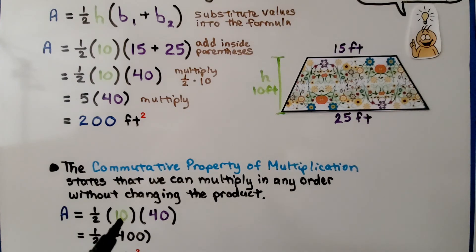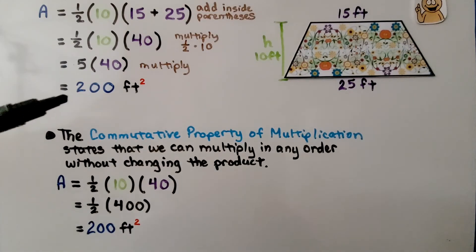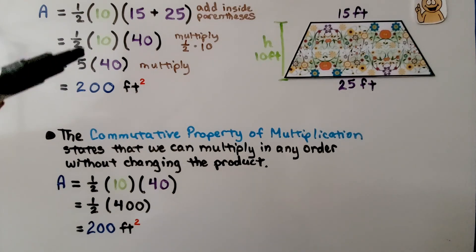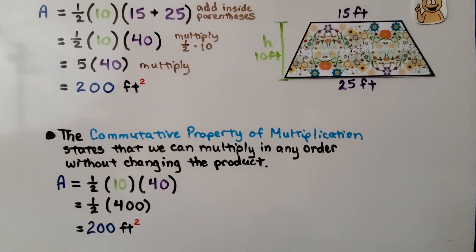The commutative property of multiplication states that we can multiply in any order without changing the product. So we can multiply the 10 times 40 first, and get 400, and then multiply that by a half. We would still get 200 feet square, just like we did up here. Instead of multiplying the half to the 10 first, we multiplied the 10 to the 40 first, and then multiplied it by half.